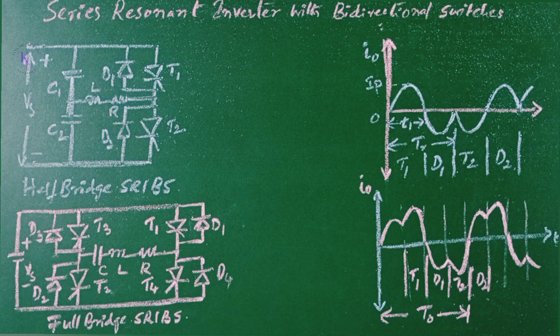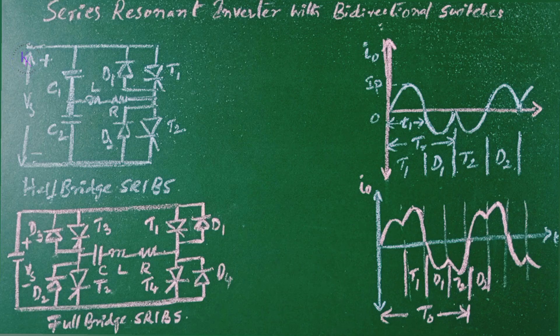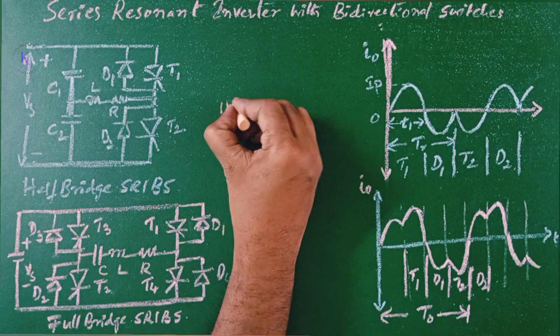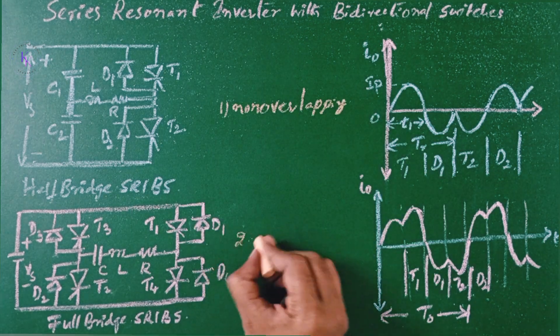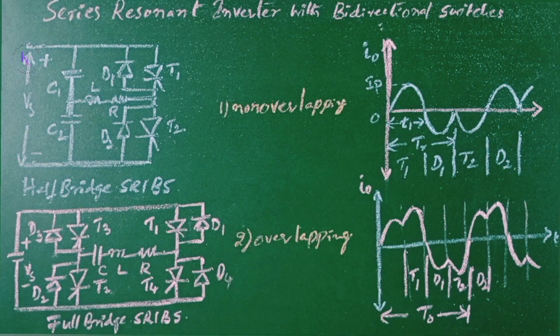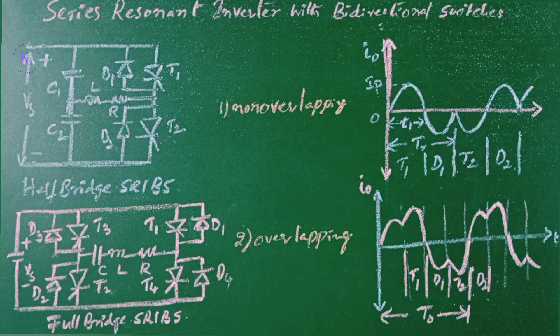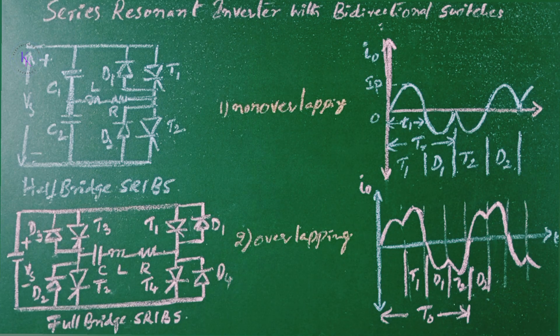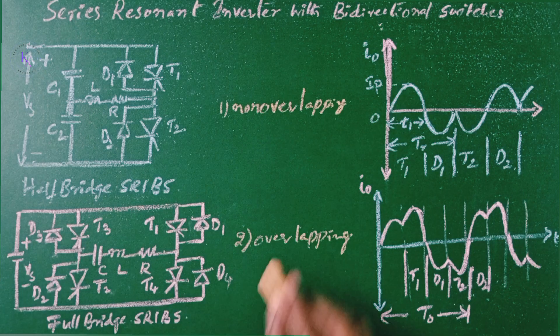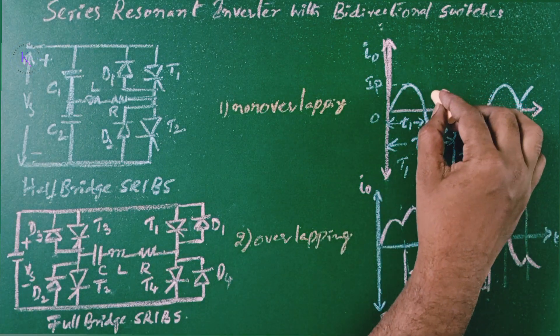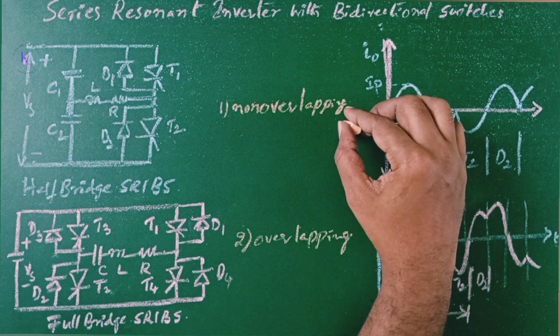The inverter can be operated in two different modes. First one, non-overlapping and second one, overlapping. In overlapping mode, the firing of thyristor is delayed until the last current oscillation through a diode has been completed. These are the waveforms which we are going to get in non-overlapping mode.